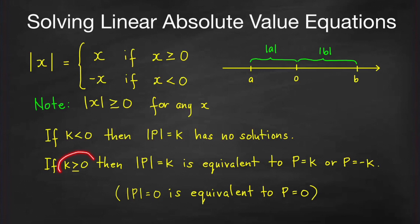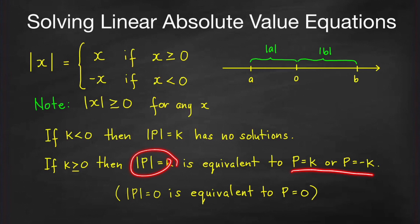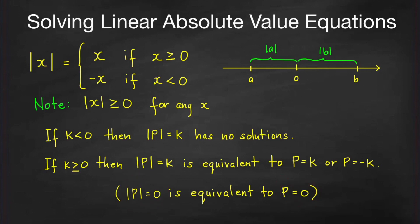But if k is greater than or equal to 0, then the equation |p| = k is equivalent to two equations: p = k or p = −k. For example, if |p| = 5, then p is either 5 or negative 5. Note that when k = 0, these two equations are the same, since 0 and negative 0 are both 0. So when the right-hand side is 0, you just solve p = 0.